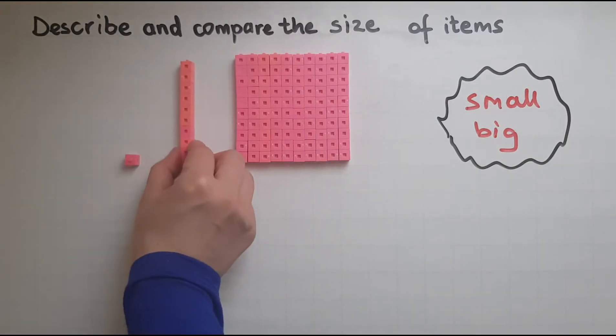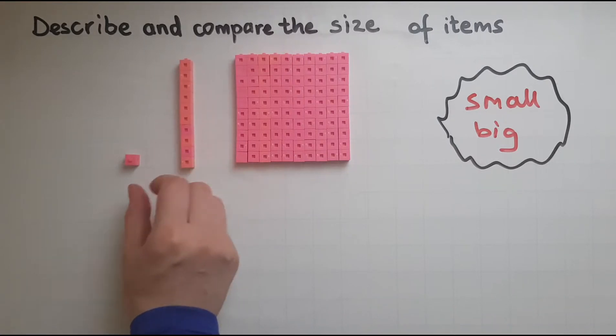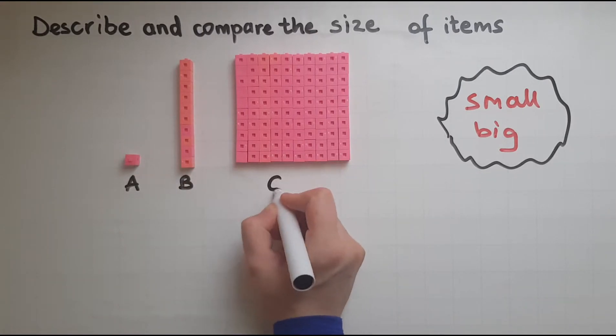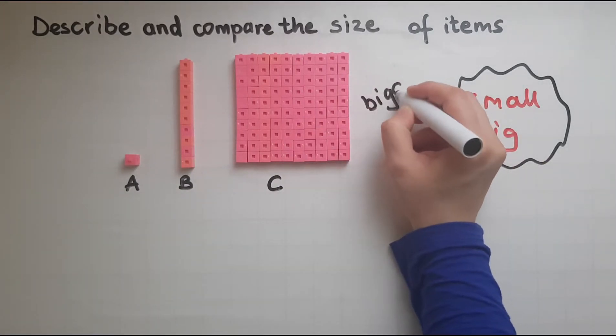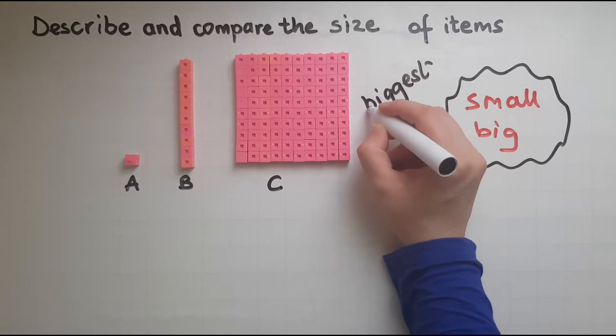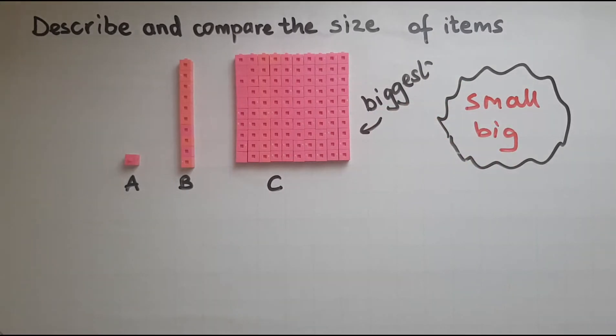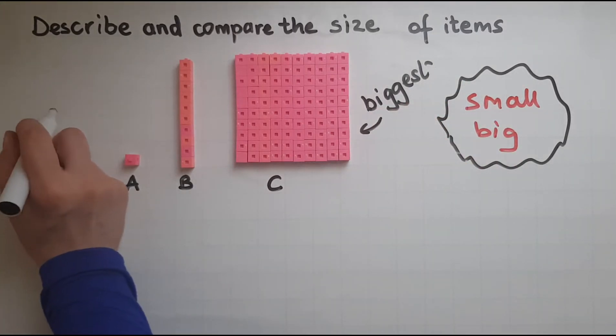I'll add in another item so that we can easily compare them. So we've got item A, B, and C. Out of all three, this block is the biggest and the smallest is this cube here.